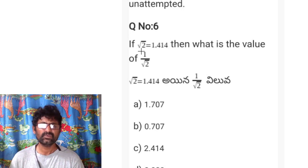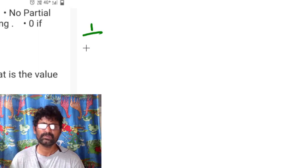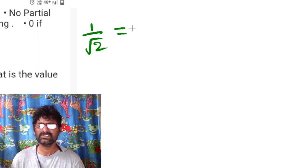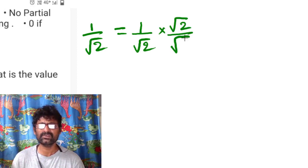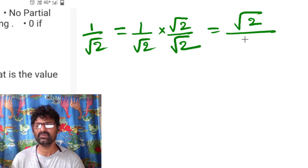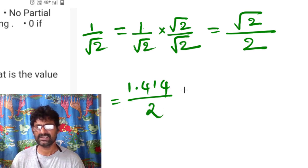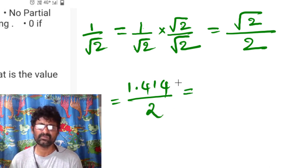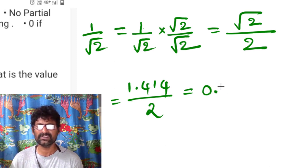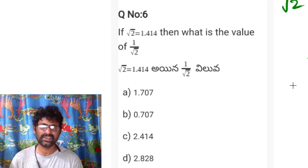Problem 6: if √2 = 1.414, find the value of 1/√2. We rationalize the denominator by multiplying numerator and denominator by √2: 1/√2 = √2/2. Substituting √2 = 1.414 and dividing by 2 gives 0.707. So the answer is option P.